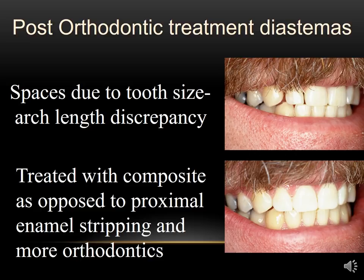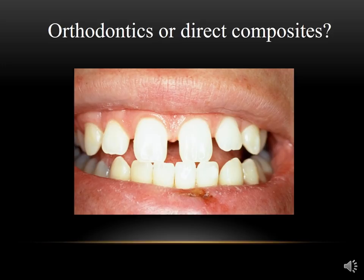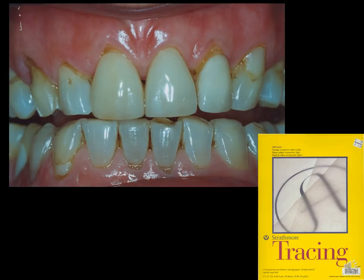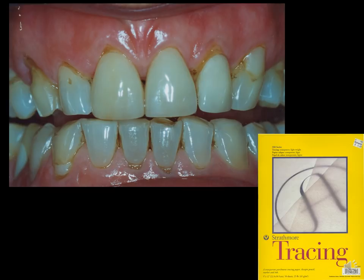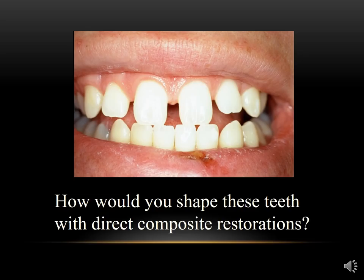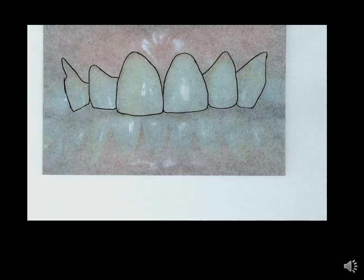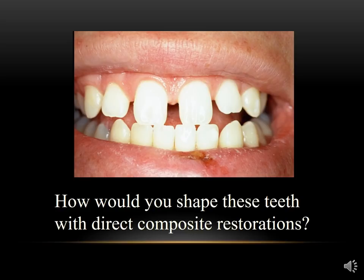Looking at a case like this, do we do orthodontics or can we do it with direct composites? The patient was not able to afford the time or expense of orthodontics. These are very large spaces. What I'm going to show you is a technique where you take a photograph, blow it up on your computer screen, put tracing paper over it, and trace the outline of the teeth you're concerned about so you can graphically see what changes need to be made. How would you shape these teeth with direct composite restorations?